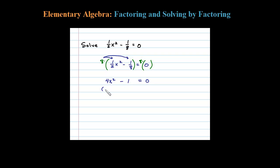It's already equal to 0, so we have (2x + 1)(2x - 1), factoring difference of squares. Then set each factor equal to 0 like normal.